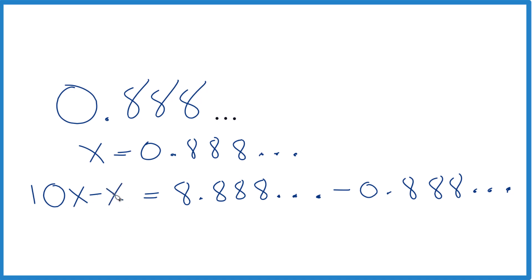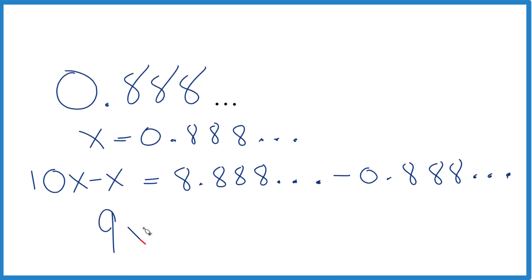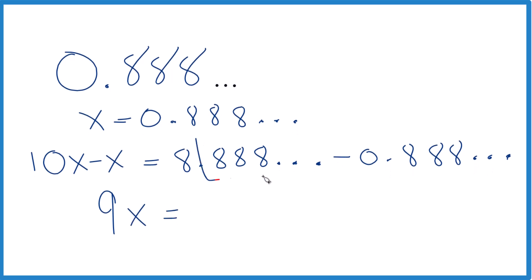Now 10x minus x, that's 9x. And over here, this is the same as this. So this is going to be gone, it's going to be 0. So we'll end up with 9x equals 8.